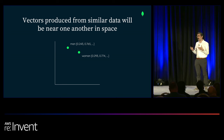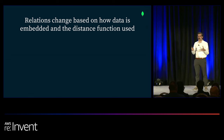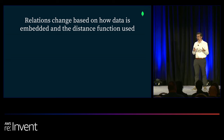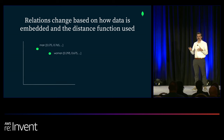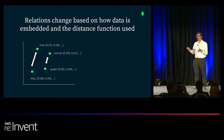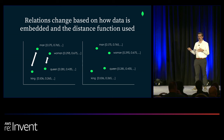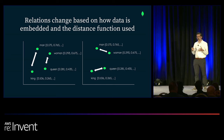This is a really powerful concept. What's also unique is that these relations between vectors change based on how you embed that data and the distance function you use to calculate what is similar or near. In one scenario with points like man, woman, king, and queen, man and king might be more similar with a certain embedding model and distance function. But with a different embedding model or distance function, you might find that man and woman are more similar and king and queen are more similar. This is how vectors end up representing their underlying data.